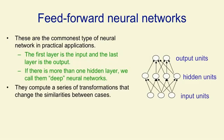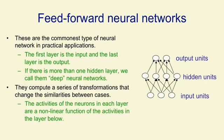In speech recognition, for example, we'd like the same thing said by different speakers to become more similar, and different things said by the same speaker to become less similar, as we go up through the layers of the network. In order to achieve this, we need the activities of the neurons in each layer to be a non-linear function of the activities in the layer below.